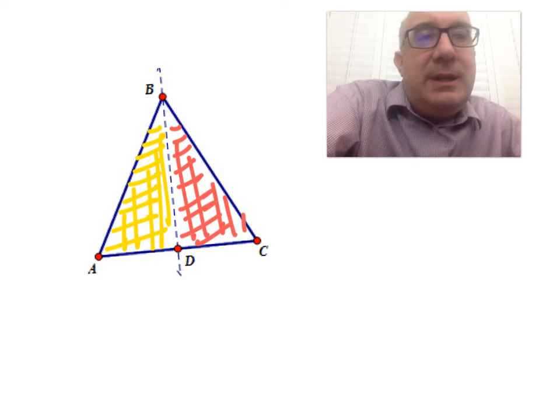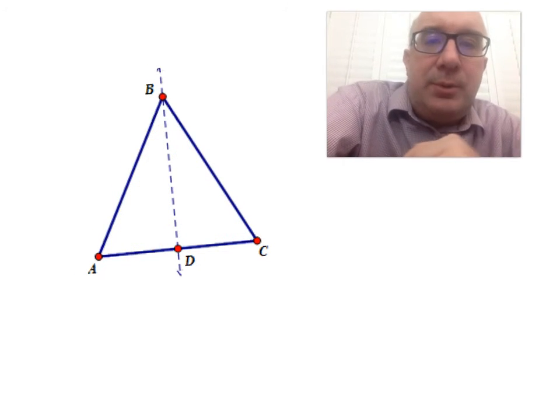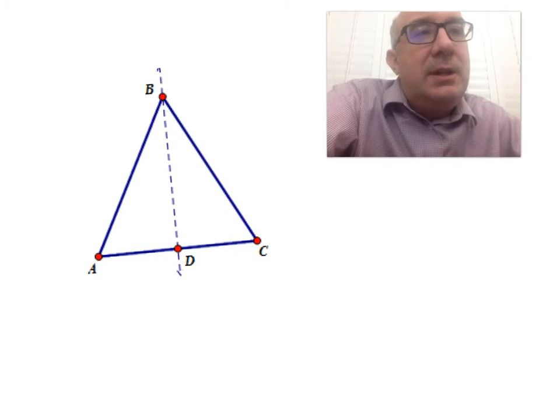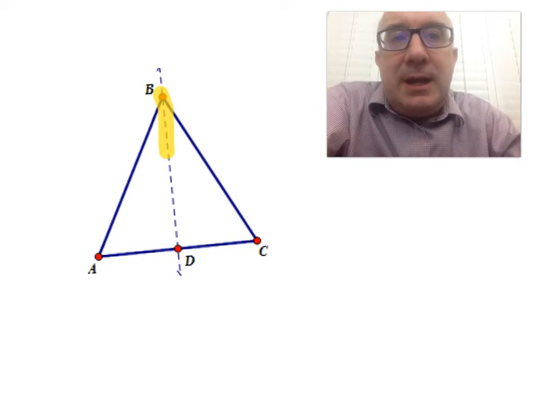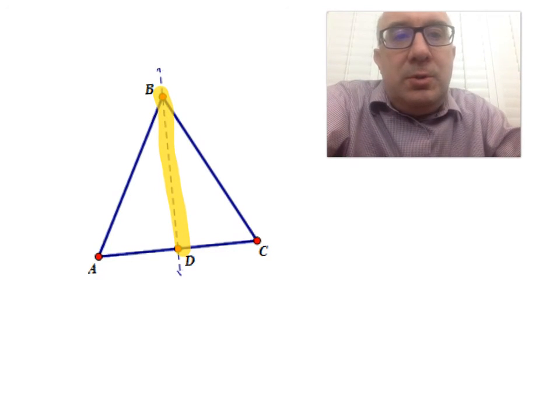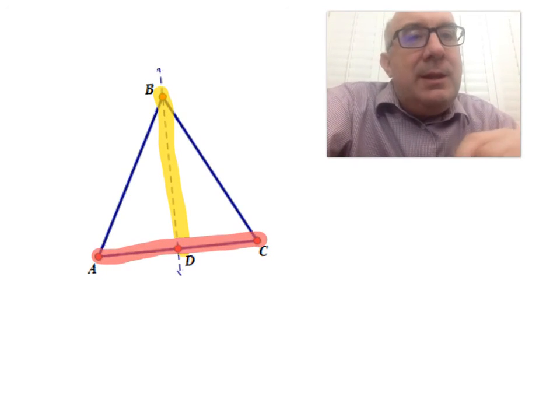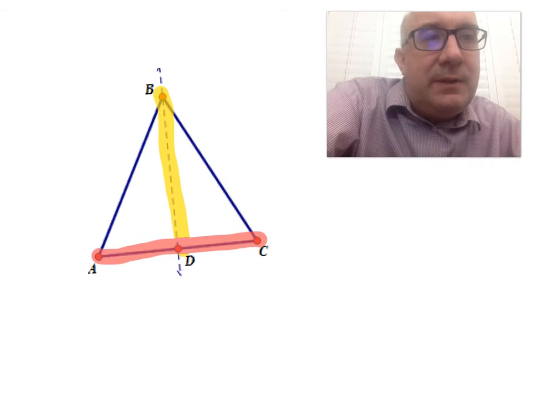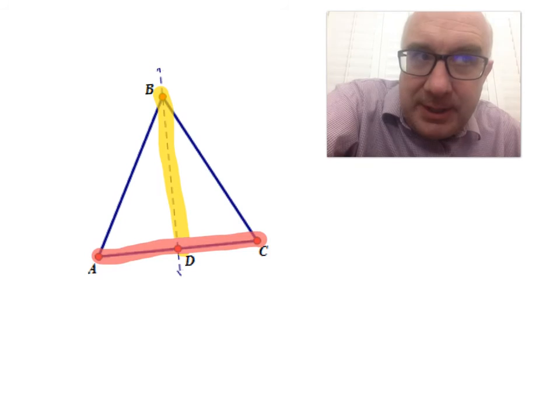The other clue I would give you about this proof is, in the given, you were instructed that BD is a perpendicular bisector to AC. Now, that means a number of things. Listen carefully to what it says. It's perpendicular.